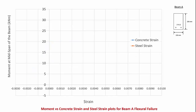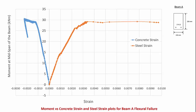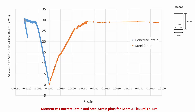Looking at the strain plots, this is the compressive strain in the concrete and this is the tensile strain in the tensile steel. The steel is yielding at 0.0025 strain at a bending moment of around 28 kilonewton meters, and there is a large plateau indicating the yielding of the steel. For the compressive strain in concrete, it reaches a maximum compressive strain of around 0.0022. The strain gauge couldn't record the crushing of the concrete at 0.003 strain because the strain gauge may have peeled off due to the initiation of the concrete crushing.